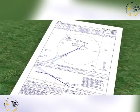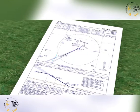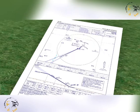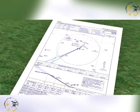Approach procedure design is a particular skill that must enable an approach to be flown in safe airspace. As the procedure takes the aeroplane closer to the runway and the ground, the safety limitations must be increased. Pilot skill or autopilot accuracy, combined with the inherent errors of the ground-based equipment, must be taken into account when producing approach designs.